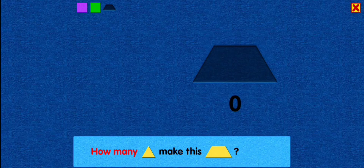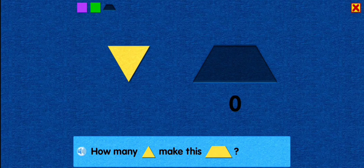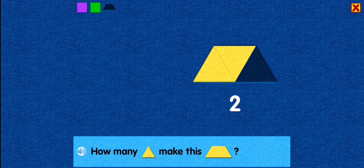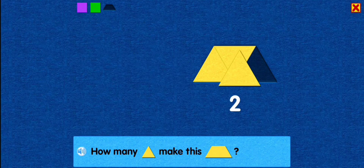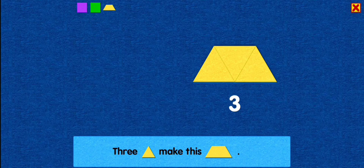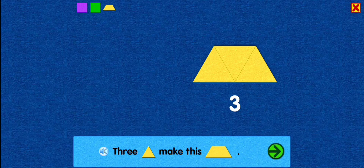How many triangles make this trapezoid? One! Two! That's right! You placed this triangle next to the center triangle. Three! Nice! You placed this triangle next to the center triangle. Three triangles make this trapezoid.